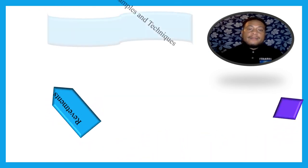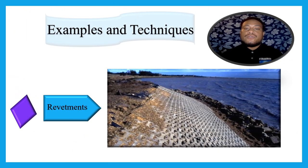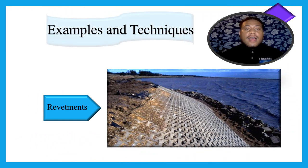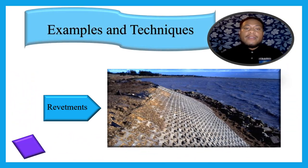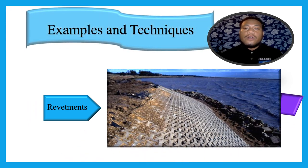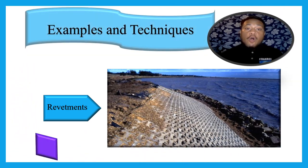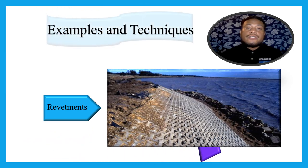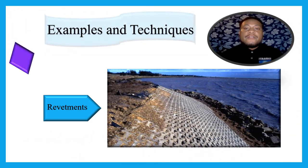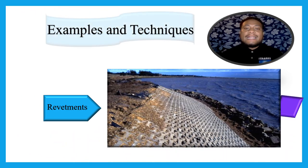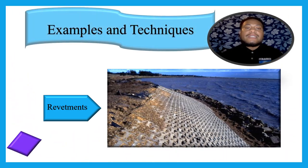Revetment. Revetments are sloping structures built on embankments or shorelines along the base of cliffs or in front of seawalls to absorb and dissipate the energy of waves in order to reduce coastal erosion. They reduce the erosive power of waves by dissipating their energy as they reach the shore.